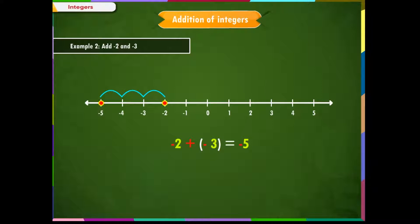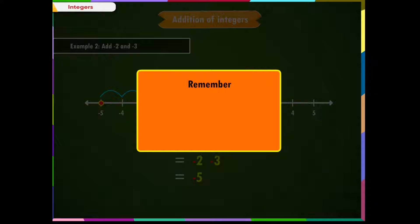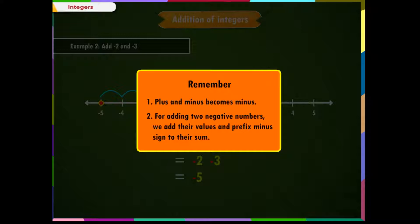Therefore, minus 2 plus (minus 3) is equal to minus 5. We can also write this as minus 2 plus (minus 3), which equals minus 2 minus 3, equal to minus 5. Remember the important points: 1. Plus and minus becomes minus. 2. For adding two negative numbers, we add their values and prefix minus sign to their sum.